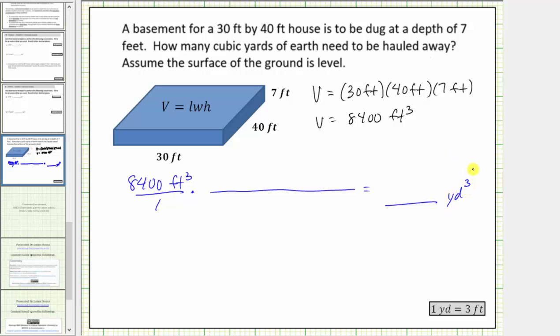And because we have cubic units here, we will need three conversion factors using the conversion one yard equals three feet in order for feet cubed or cubic feet to simplify out.